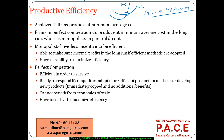Production efficiency is achieved if the firm is producing at the minimum average cost. In case of a perfectly competitive environment, we can directly see that firms operate at the minimum average cost itself. Otherwise, if they are not operating at the minimum average cost, they are losing out — they are facing a kind of a loss.